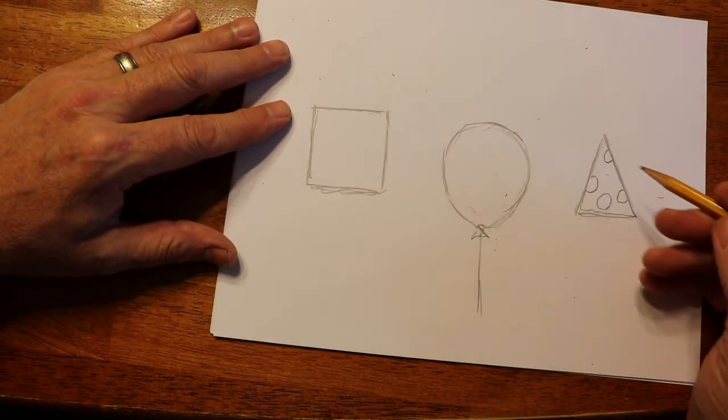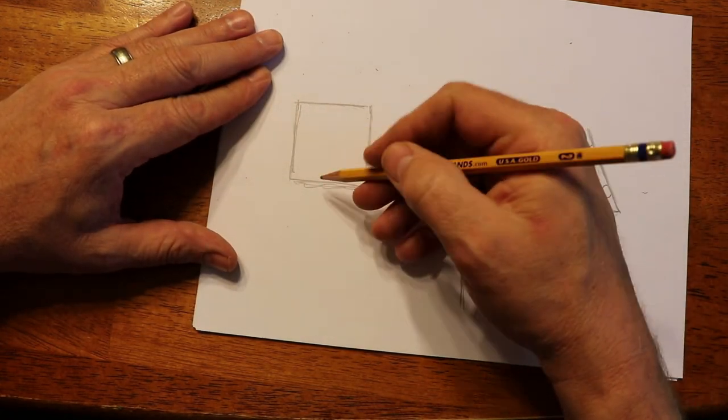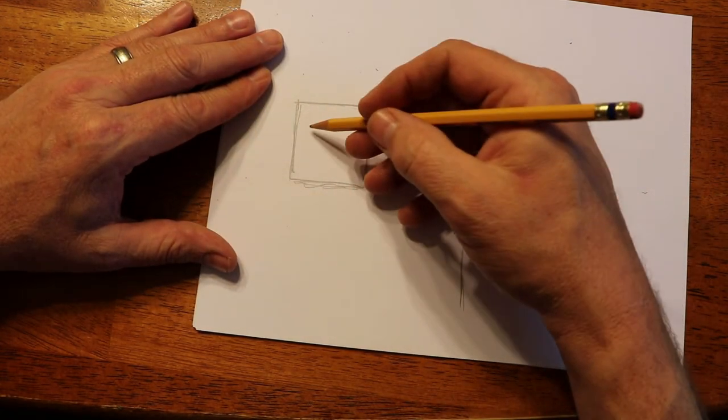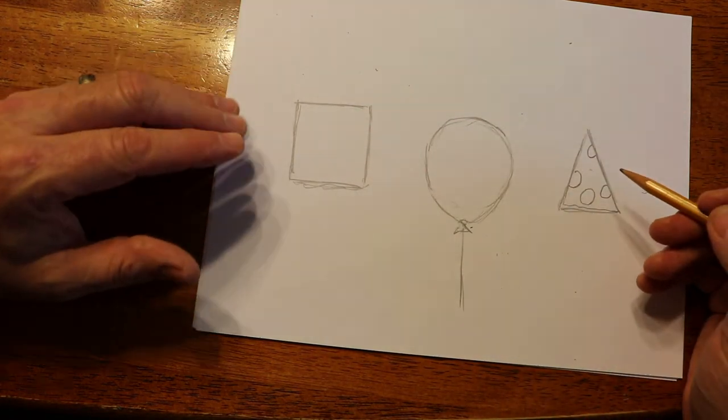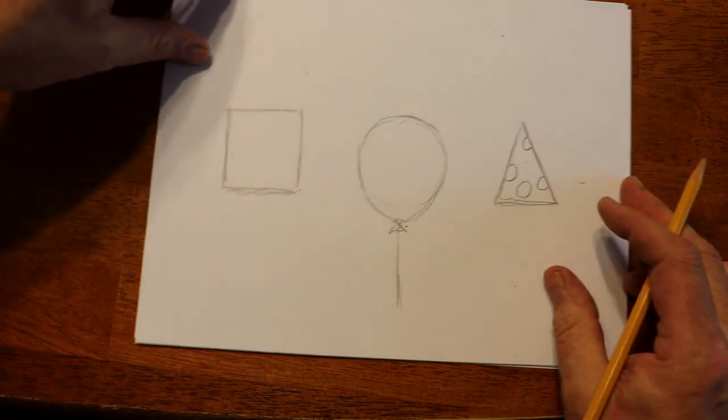And the square could very easily be turned into maybe like a rectangle. This could be a book. Write your favorite book name there. Or whatever you decide to do with it.